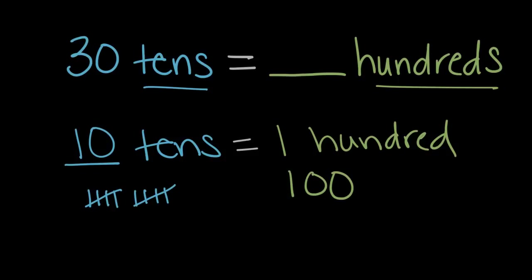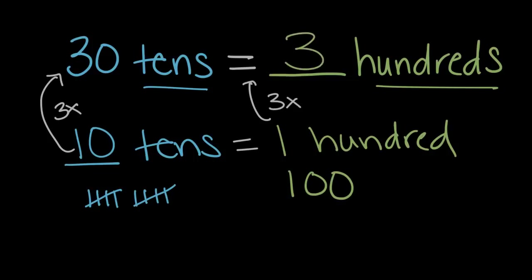So if there are ten tens in one hundred, how many hundreds are in thirty tens? To get from ten tens to thirty tens, that's three times as many tens, so we'll also have three times as many hundreds — or three hundreds. Thirty tens is three sets of ten tens, and ten tens are a hundred, so thirty tens is three sets of hundreds, or three hundreds.